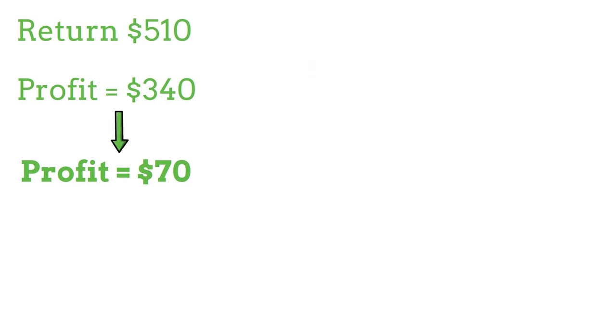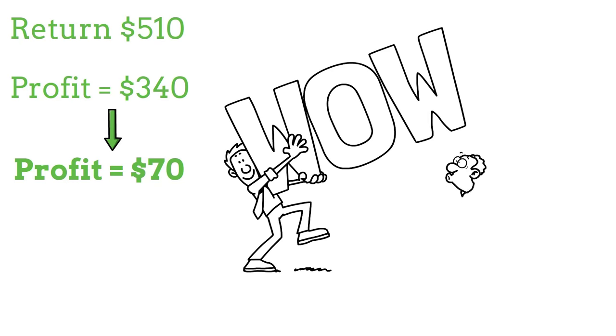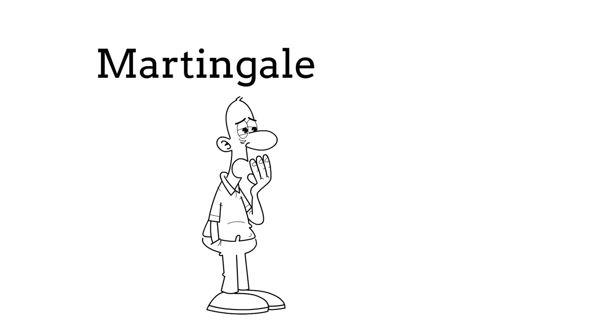So amazingly, with the Fibonacci sequence we actually end up making more profit the longer our losing streak becomes. Many of you will know that betting strategies like the Martingale you'll end up winning the same amount of profit when you finally hit a winning number, and the length of the losing streak is irrelevant.